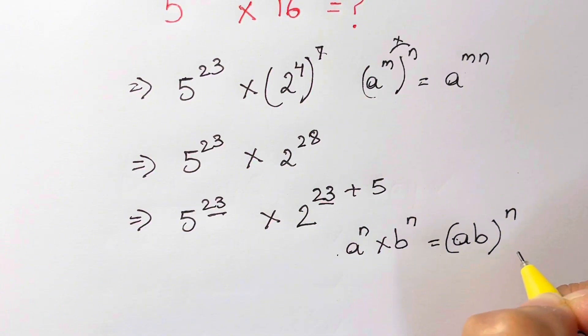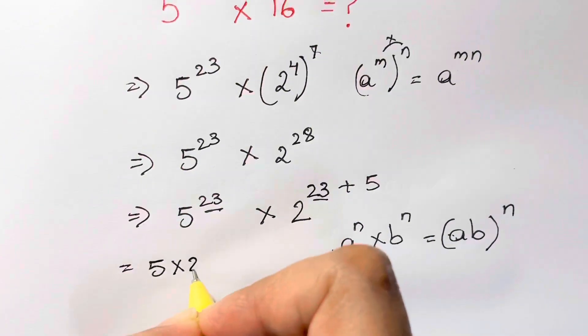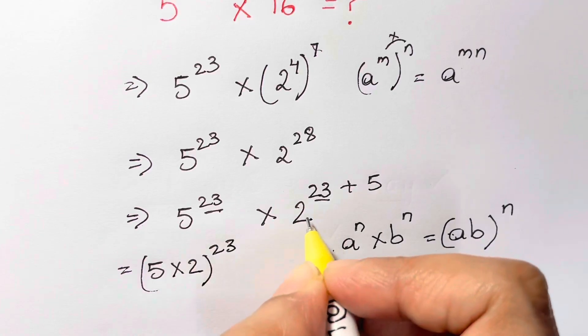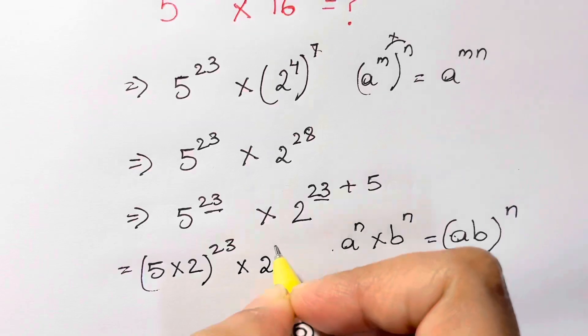So let's write it down. We have 5 times 2 whole to the power of 23, and here we have 2 to the power of 5.